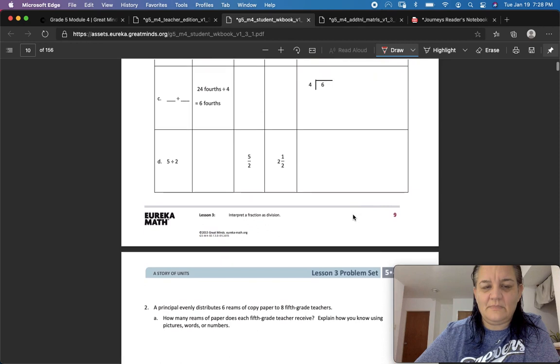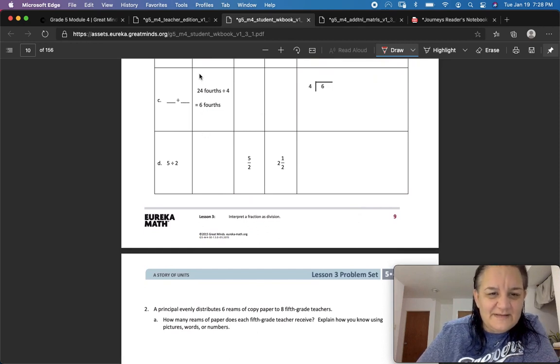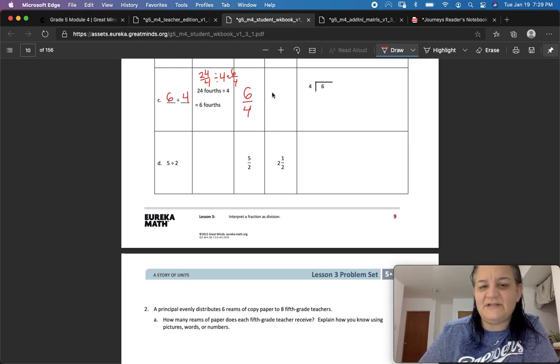C. 24 fourths. So that looks like that. 24 fourths divided by four equals six fourths. Six fourths. So that means six divided by four. Six over four. Six fourths. And if we're going to make that into a mixed fraction, this is improper. As a mixed fraction, it's one and two-fourths. And you could even call that one and one-half because they equal each other.